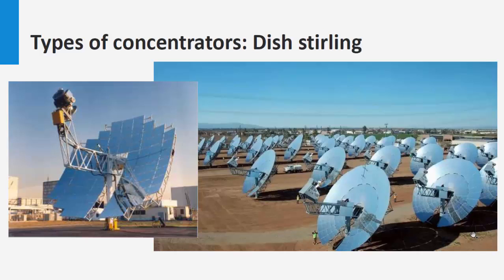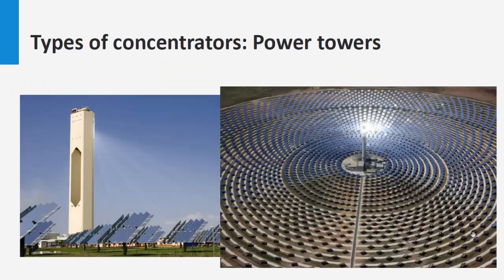Now we will look into solar power tower plants. They consist of an array of dual-axis tracking deflectors, commonly named heliostats, which concentrate sunlight on a central receiver containing the working fluid. The fluid can be heated to 500 to 1000 degrees Celsius and then used in a power generator or energy storage system. They are a very efficient system and have easier storage.